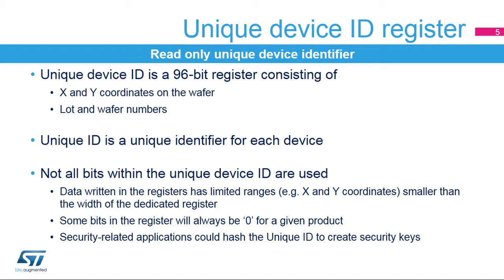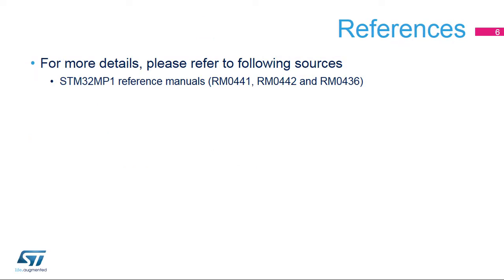As each record within the unique identifier has a given range, like the X and Y coordinates, not all the bits in the device ID are used. This is important for security-related purposes, where the number of bits used is an important parameter. Such security applications could hash the unique ID to create security keys. For detailed information, please refer to the device's reference manuals and data sheet.